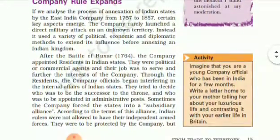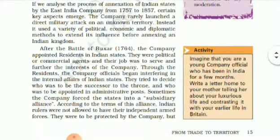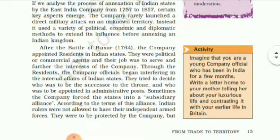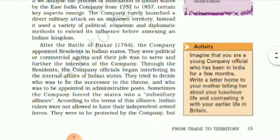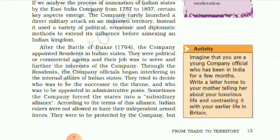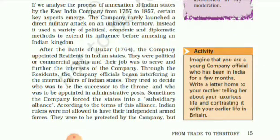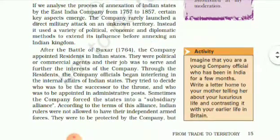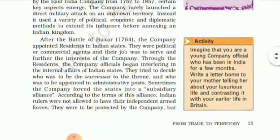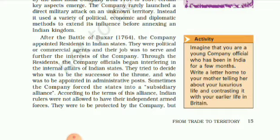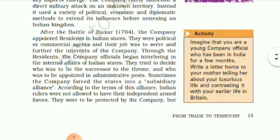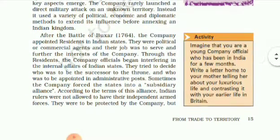Company Rule Expansion: If we analyze the process of annexation of Indian states by the East India Company from 1757 to 1857, certain key aspects emerge. The company rarely launched a direct military attack on an unknown territory; instead, it used a variety of political, economic, and diplomatic methods to extend its influence before annexing an Indian kingdom.